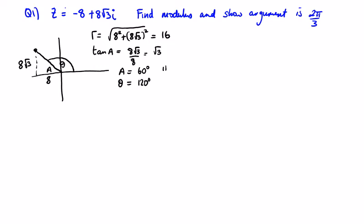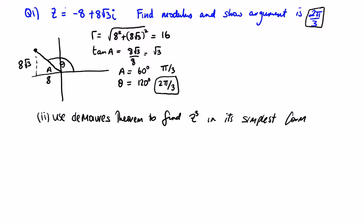You can use degrees or radian form in the Leaving Cert, so it's up to you. 180 divided by 3 is 60, and two of them is 120. They do ask for it in radian form here, two pi over three, so that's part one done.